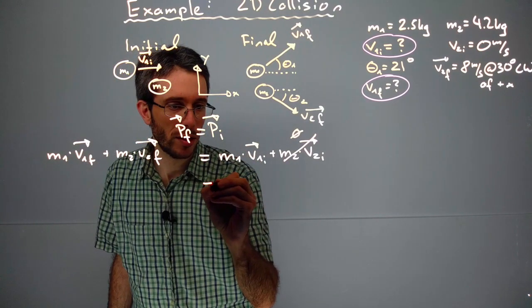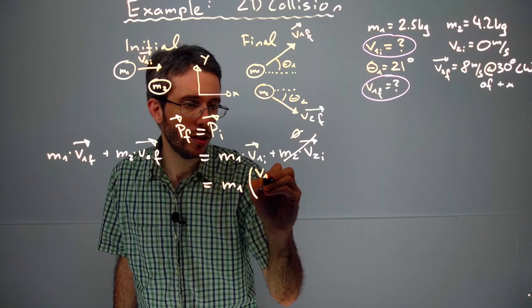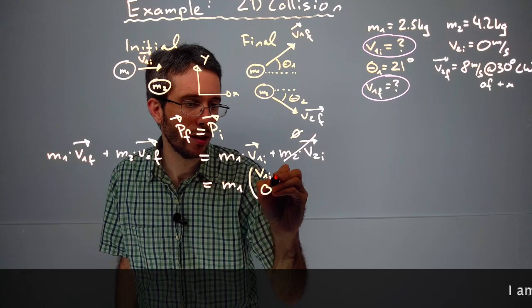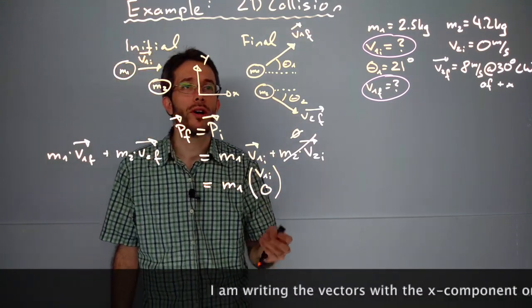For the initial side this is very easy. We have m1 and then we only have v initial in x and nothing in y direction. So the initial part is very simple.